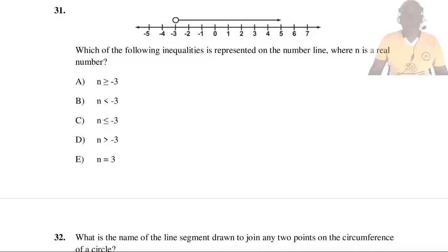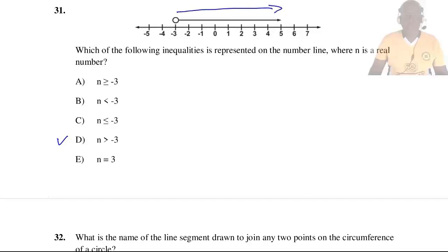Question 31: Which of the following inequalities is represented on the number line, where N is a real number? The answer is D: N is greater than −3. All values from the starting point of the arrow are greater than −3. Since −3 itself is not included, a small empty circle is indicated at −3.